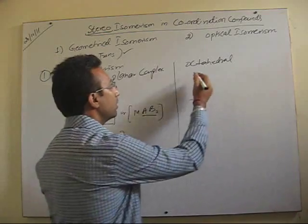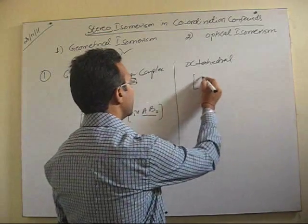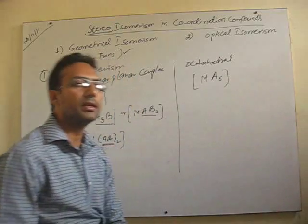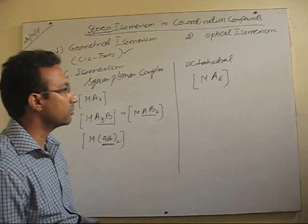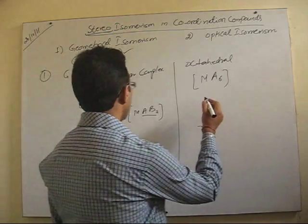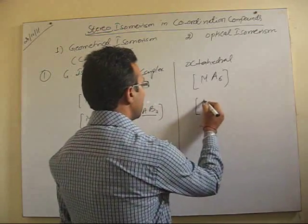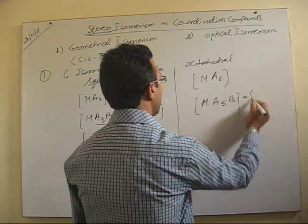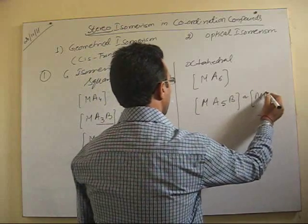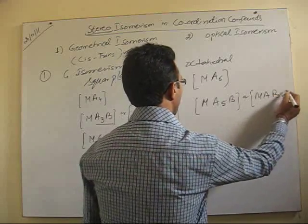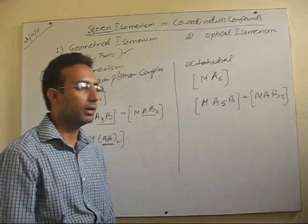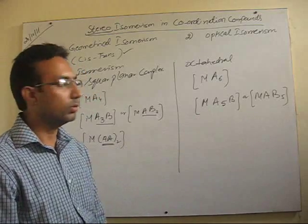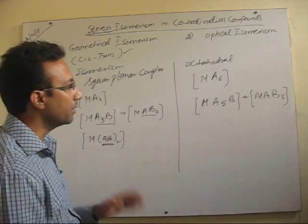Such cases also exist in octahedral complexes. The case like MA6, where all six ligands are the same — changing the position will not affect the environment. Another example is MA5B or MAB5; in this case it is also not going to give any new structure because the environment remains the same.